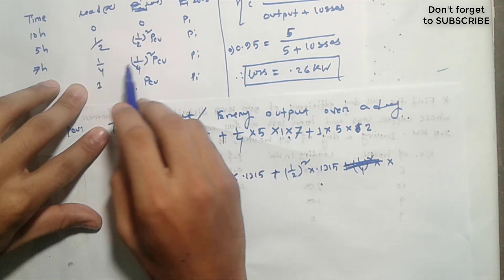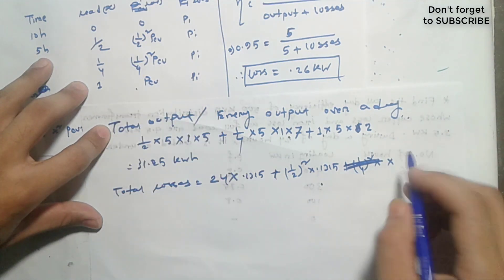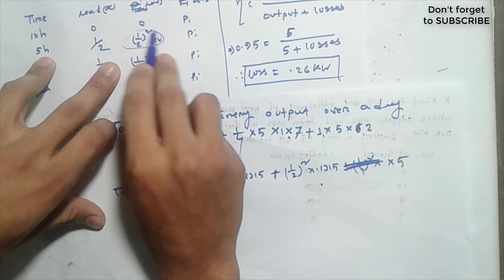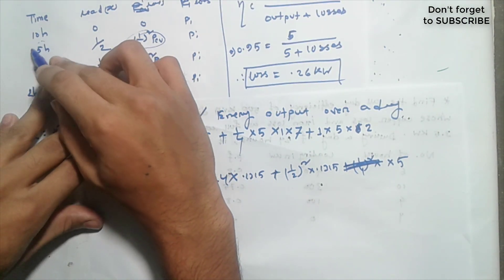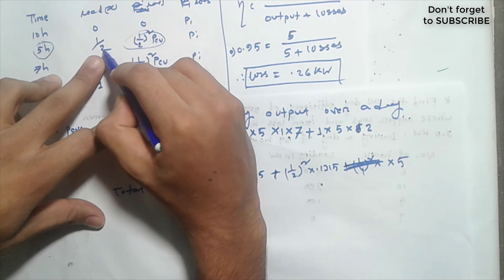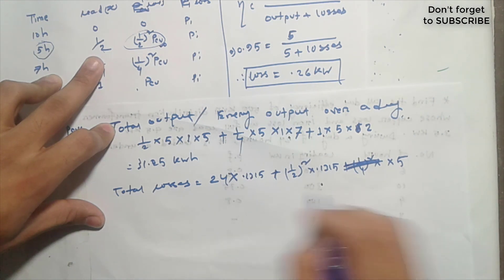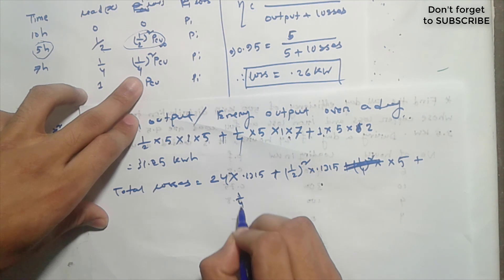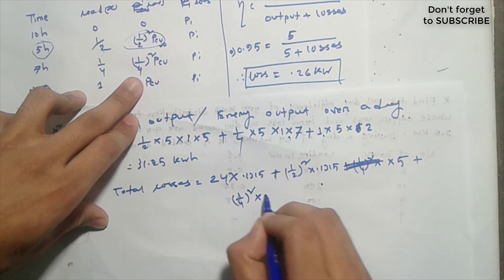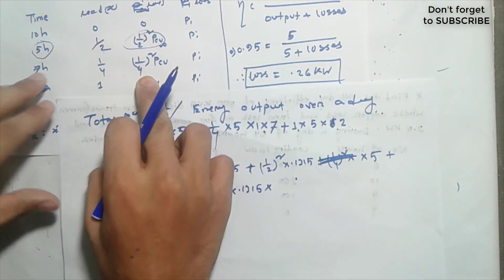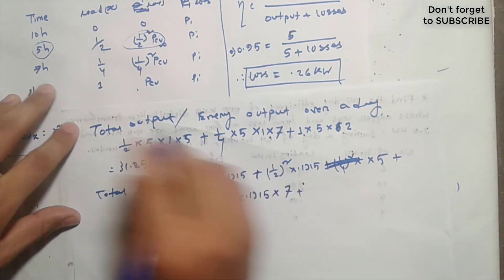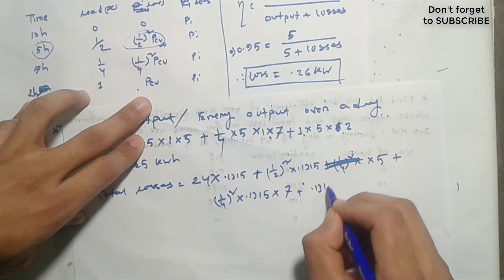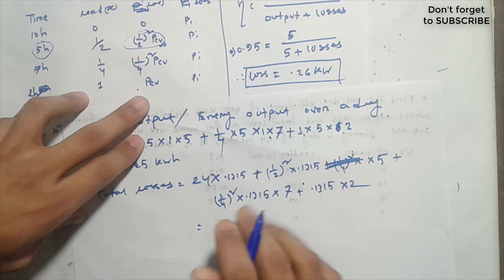We have 5 hours at half load, so the copper loss for that period is half-squared into Pcu. For the quarter-load period: 1/4 squared into Pcu, which is 1.315 kilowatts multiplied by 7 hours. For full load: 1.315 into 2 hours. We sum all these to get the total copper loss over the day.